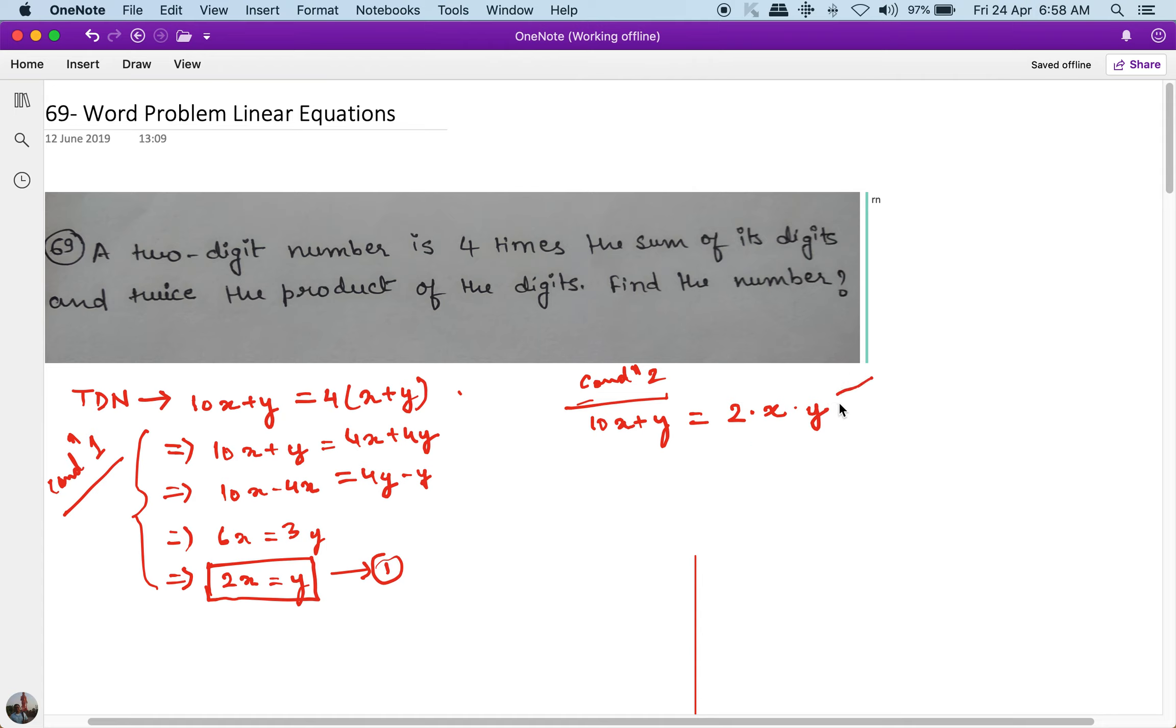But we know that y is equal to 2x, so I can replace this y everywhere. So what will it become? It will become 10x will remain 10x plus y is 2x from equation 1 and substituting this part here, plus 2x is equal to 2 into x into 2 into x.